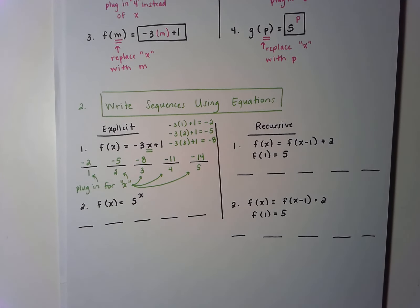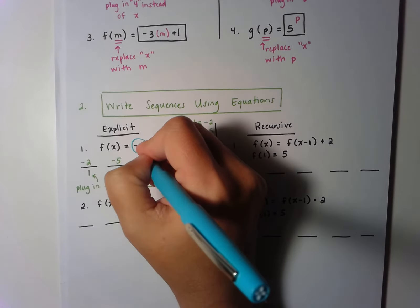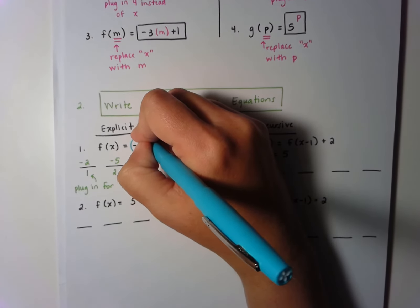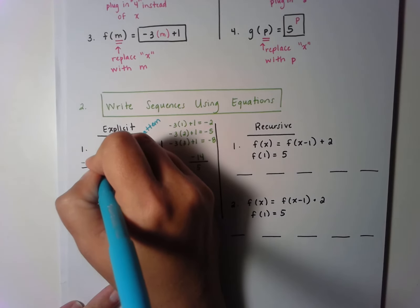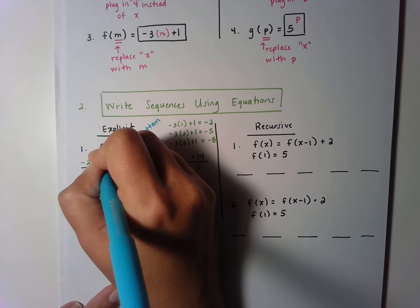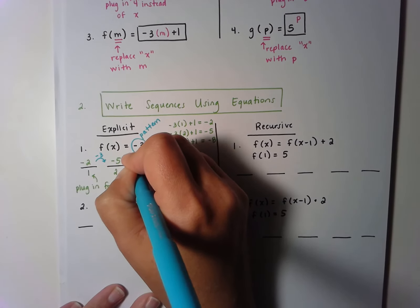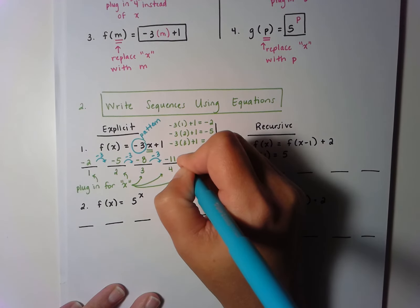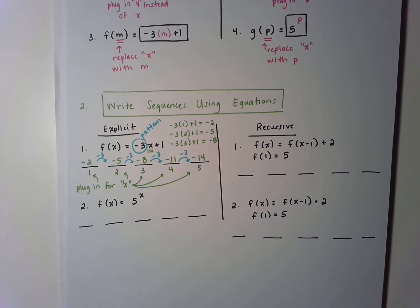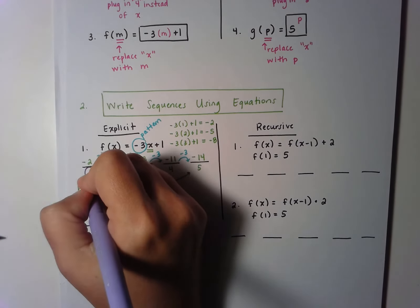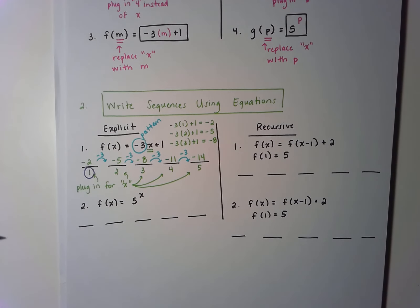Now, the second way to think about this problem is that we can find the common difference by looking at the equation. The common difference is always the pattern — the number that's multiplied by the x. You'll notice that to go from negative 2 to negative 5, we are subtracting 3 each time. So you can think about this as the pattern or as just plugging in numbers each time. Either way, you do need to plug in the number 1 to get the starting value — you always have to plug that in, otherwise you won't have the right starting value for your pattern.